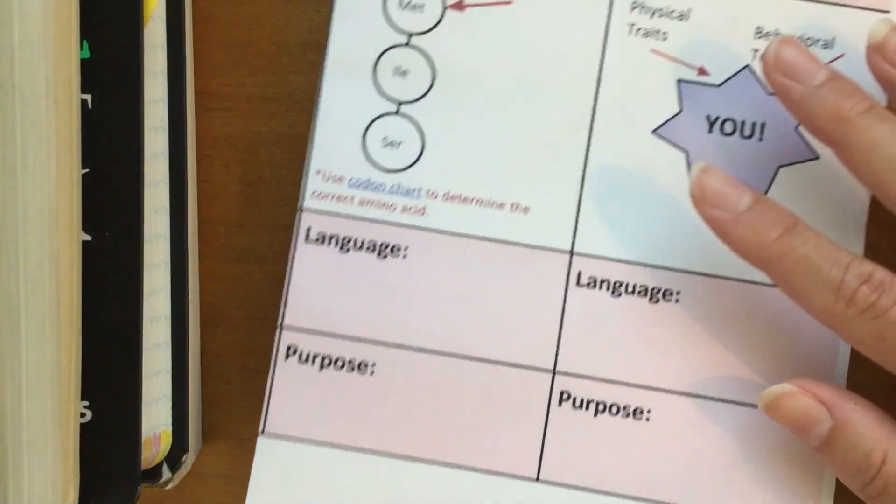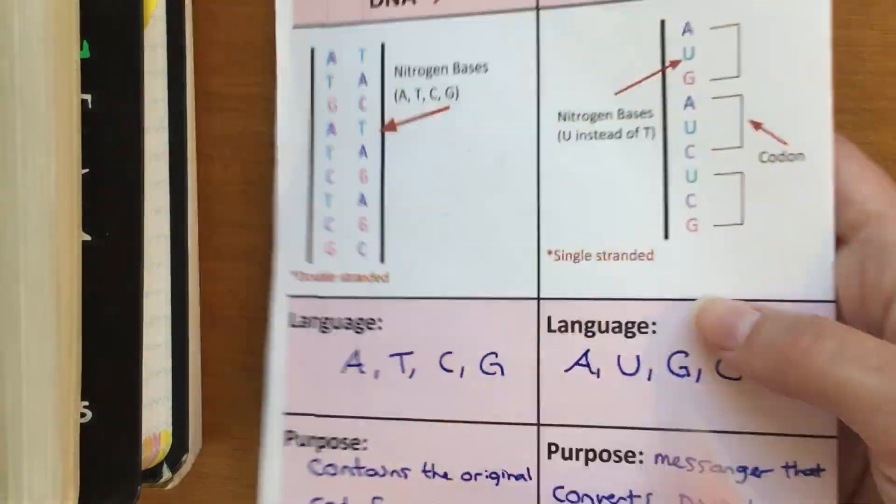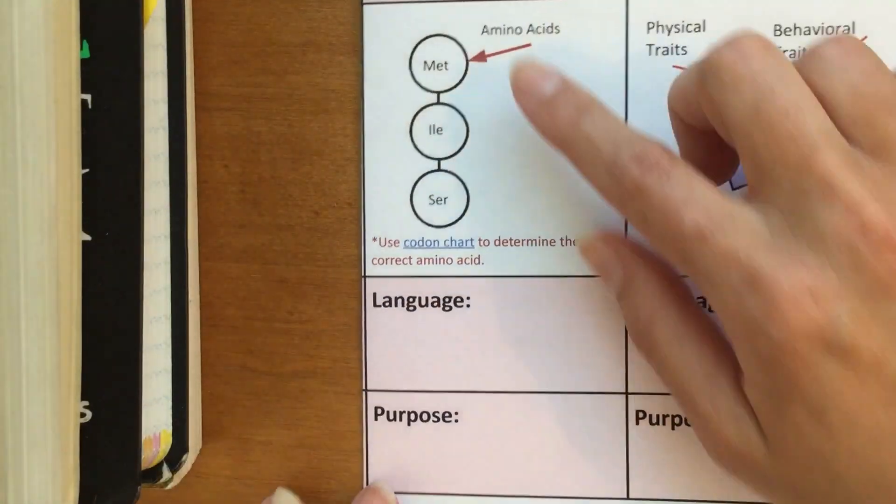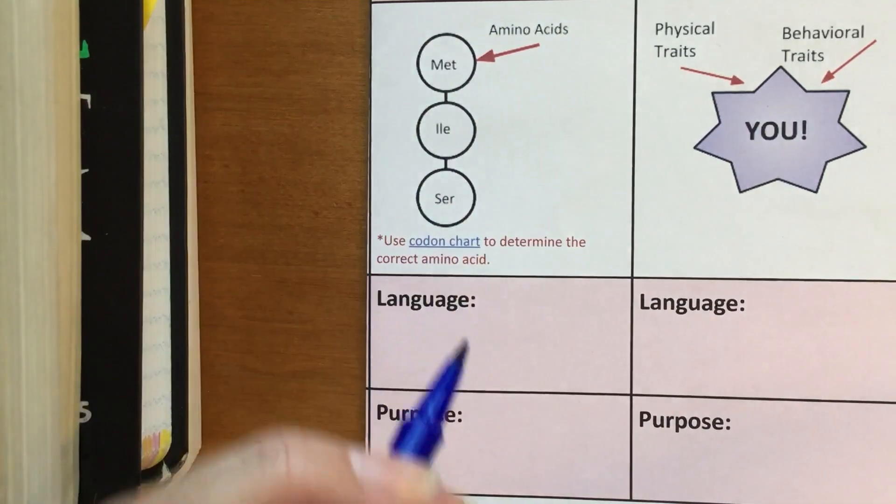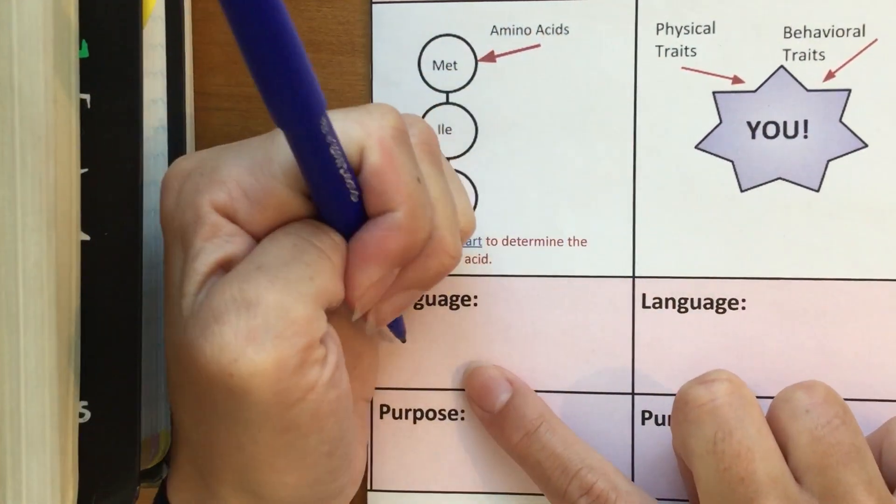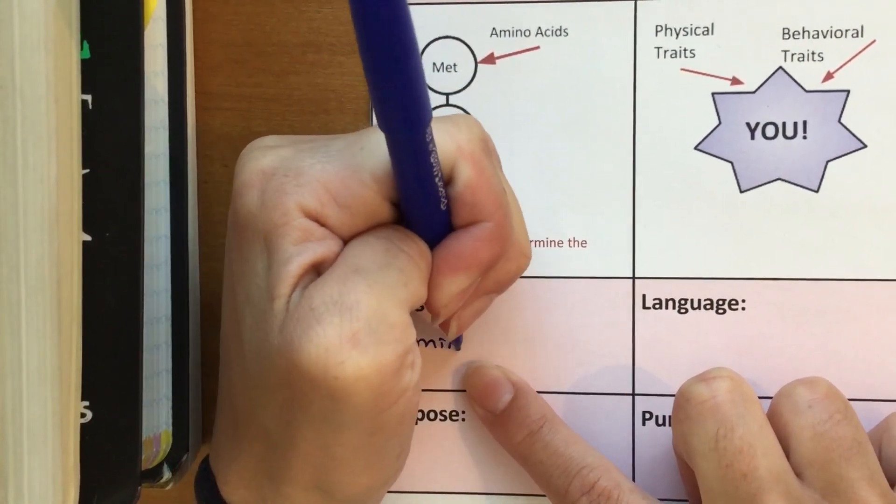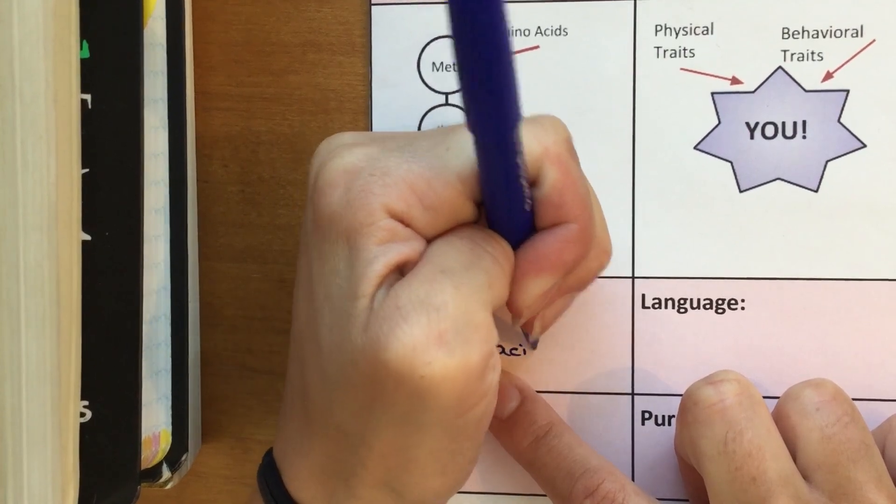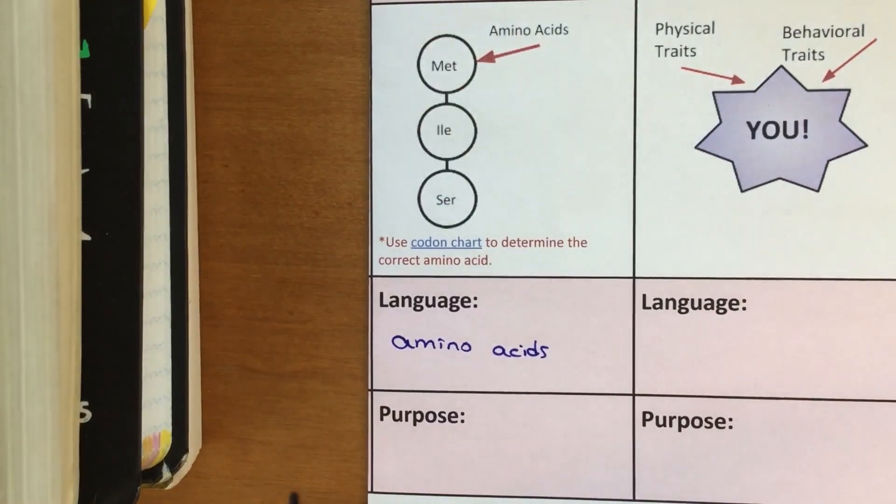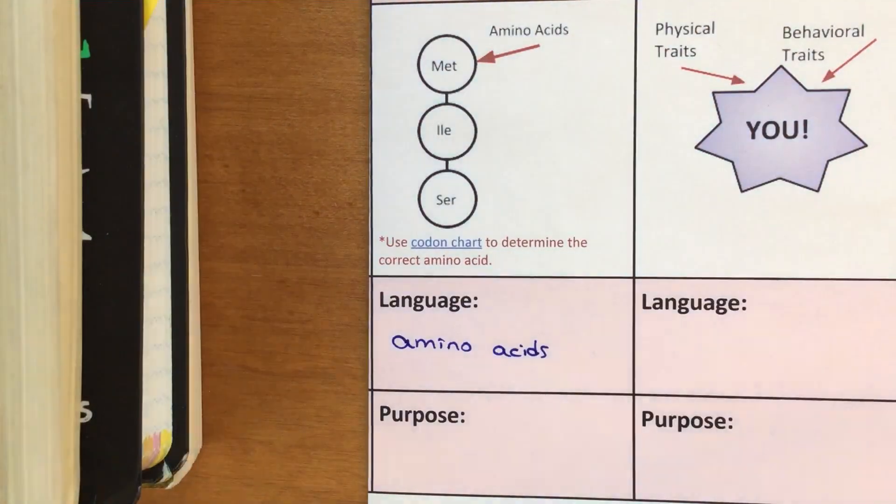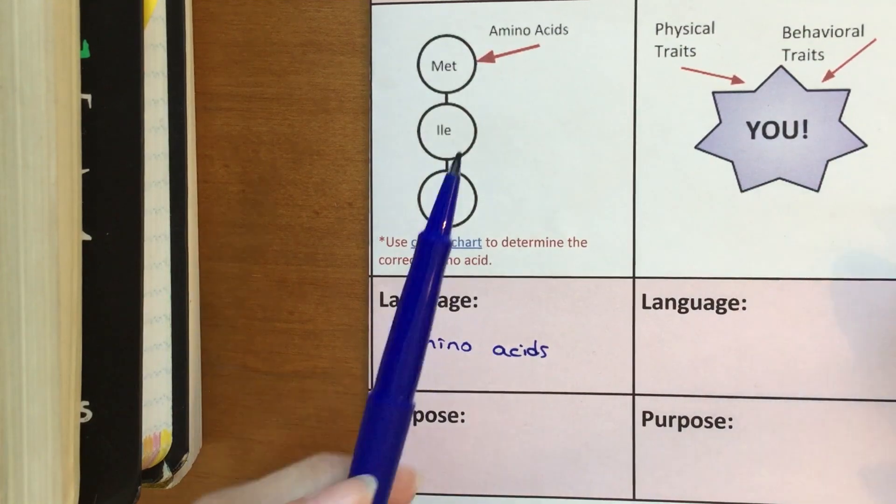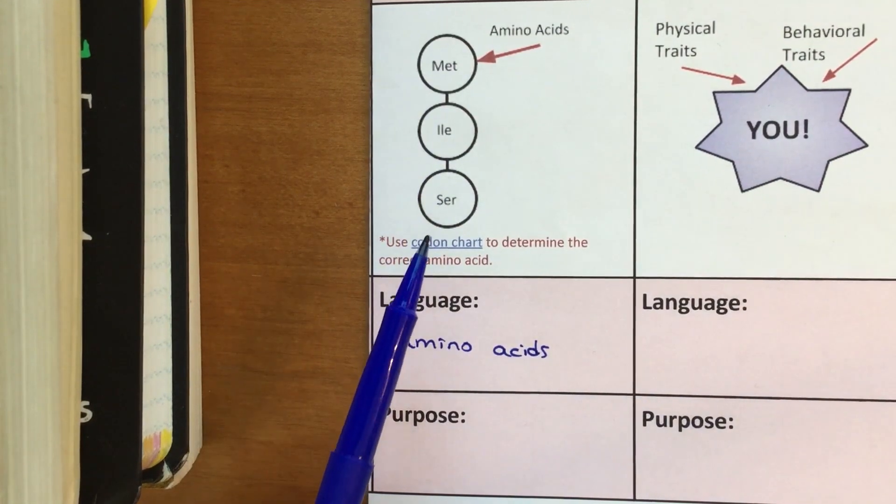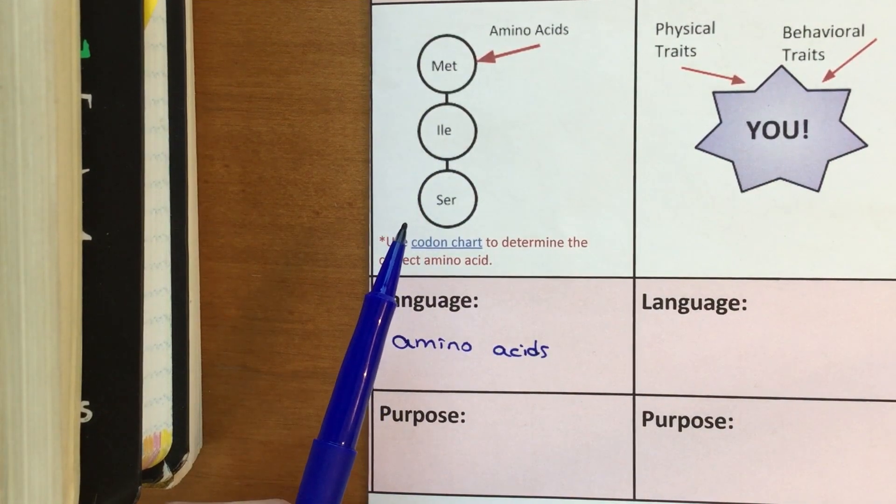Now we've taken that code, that RNA, and we've turned it into a chain of something called amino acids. So amino acids are going to be our language for protein. And we have a big string of amino acids, and together, a bunch of amino acids strung together equals a protein.